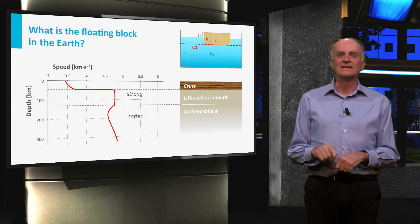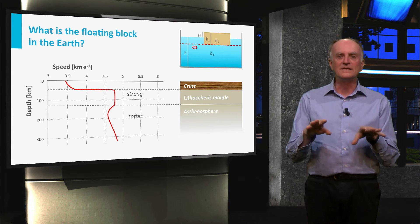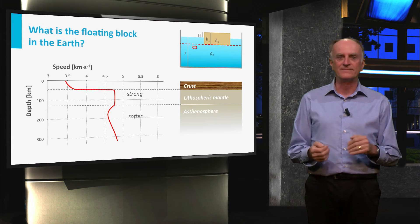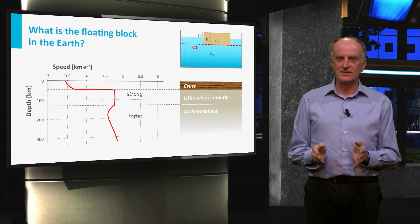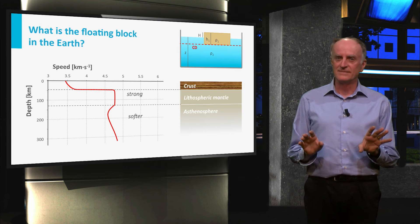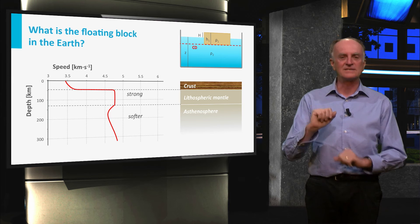Yes, the asthenosphere is hot, has a small portion of melt and can flow more easily than the overlying layers. Never forget that we are talking of flow at solid state, comparable to that of ice. The floating block is the lithosphere, the fluid is the asthenosphere.